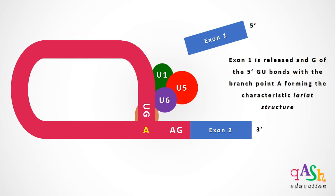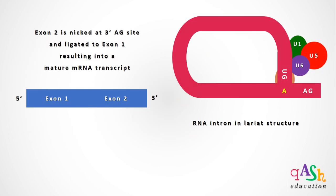Exon 1 is then released, and the guanine residue of the 5' GU splice site now bonds with the branch point adenine. After the branch point adenine is bonded with the 5' GU sequence, exon 2 is cleaved after the 3' AG splice site and is then ligated to exon 1. This process is governed and regulated by the active spliceosome complex.